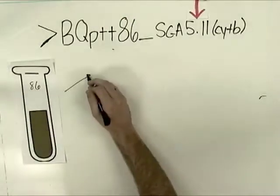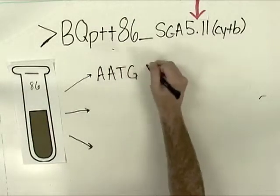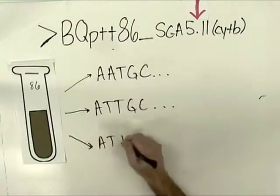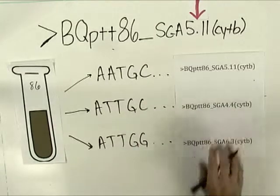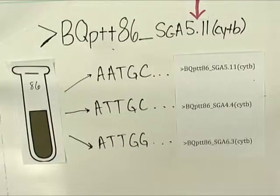Fecal samples often contain more than one Plasmodium. The SGA number is used to identify each sequence within a sample.